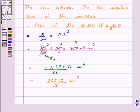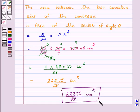Hence, the area between the two consecutive ribs of the umbrella is 22275 upon 28 cm squared. This is our answer. I hope the solution is clear to you. Bye and take care.